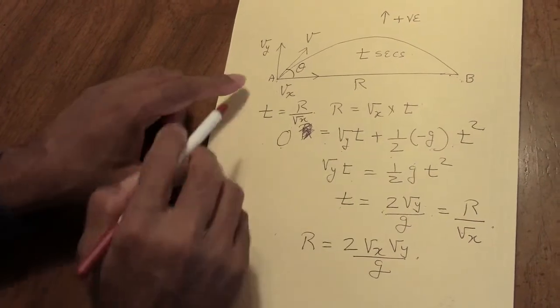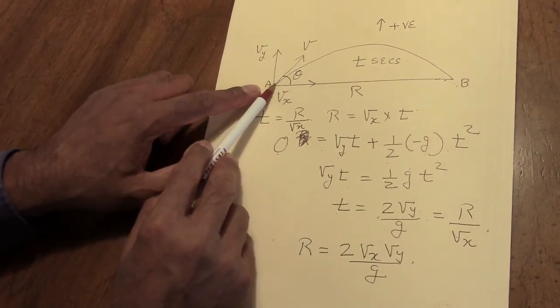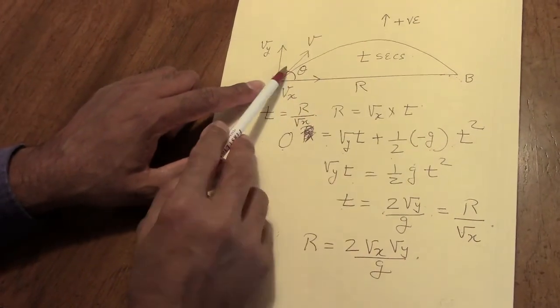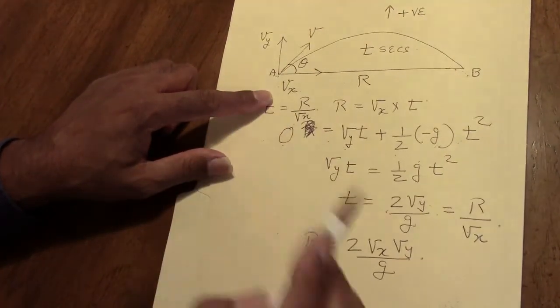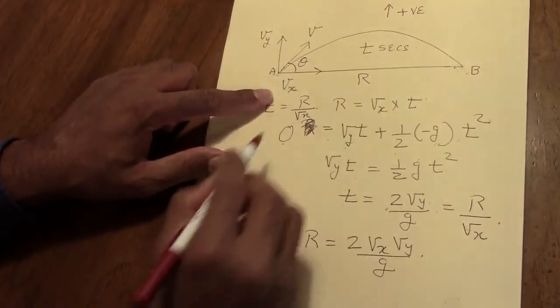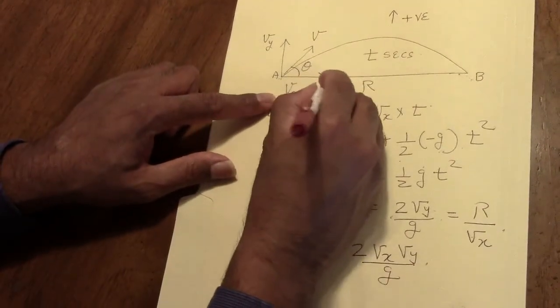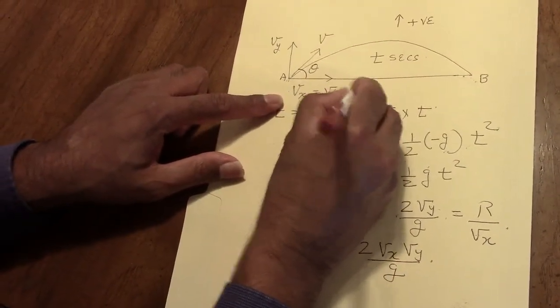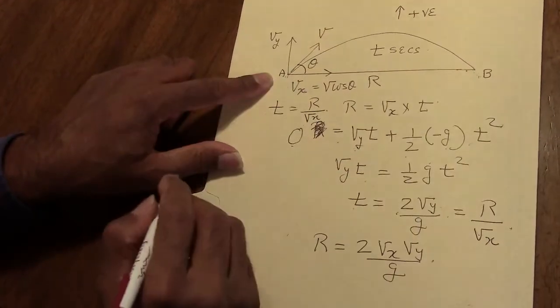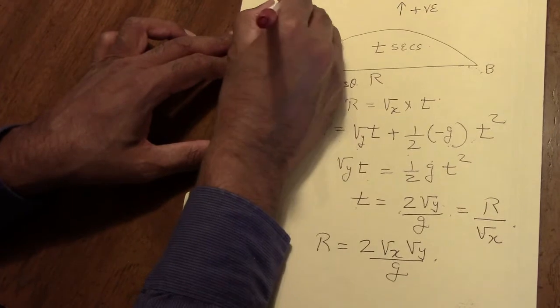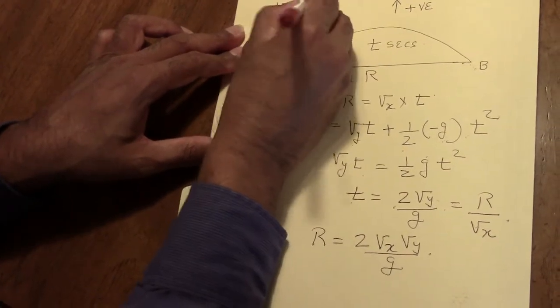Now the component of the velocity in the horizontal direction at angle theta is V cos theta. So Vx is V cos theta. And the velocity in the vertical direction, the component, is V sin theta.